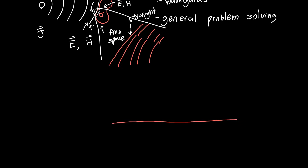Let's orient this along the horizontal direction so we don't have to worry about slantiness. On this side we've got one material with a certain permittivity and a certain permeability. On the other side we've also got maybe a different dielectric constant and a different permeability. This might be a metal with a certain conductivity, it might be a dielectric, it might be really anything. The boundary conditions we're going to talk about are valid for all materials.